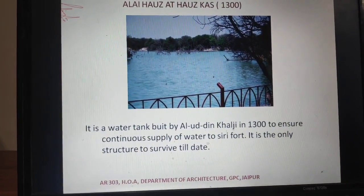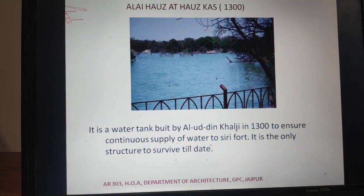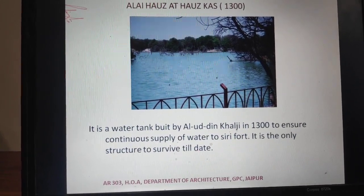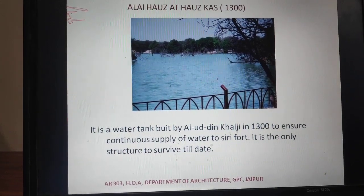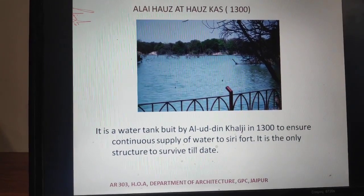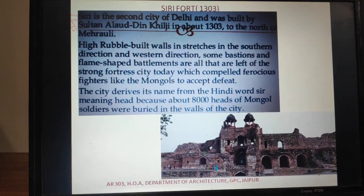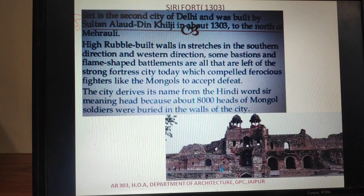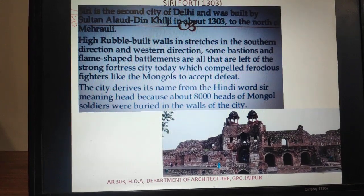The third project is the Alai Hauz, a water tank built in 1318 AD. As mentioned, they planned the second city of Delhi — Siri Fort — and for its water supply, they constructed this water body, which we call the Alai Hauz. This structure is completely intact today and still in use. The second city of Delhi, Siri Fort, was built in 1303 on the north side of Mehrauli.